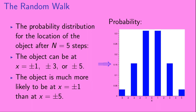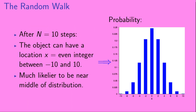Here we show the probability distribution for the location of the object after n equals 5 steps. The object can be located at x equals plus or minus 1, x equals plus or minus 3, or x equals plus or minus 5. The object is much more likely to be at x equals plus or minus 1 than at x equals plus or minus 5. And here we show the probability distribution after n equals 10 steps. Here the object can have a location of x equal to any even integer between minus 10 and 10, but it's much likelier to be near the middle of the distribution.